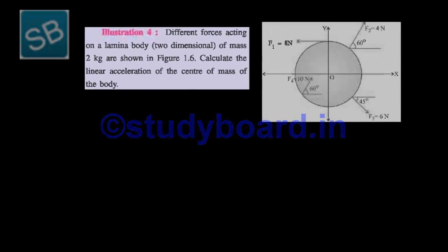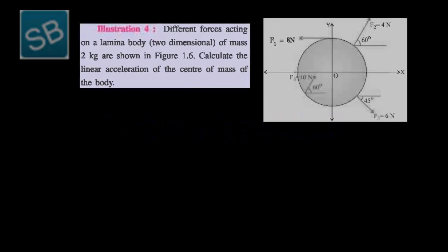Illustration number 4 is related to figure number 1.6 in the textbook, in which different forces are acting on a lamina body in two-dimensional space. The two dimensions are given as X and Y. We have to calculate the linear acceleration of the center of mass of the body. The origin is the center of mass, and the mass of the lamina body is given as 2 kg.